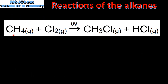And finally here we have the overall equation for the reaction — methane reacting with chlorine in the presence of UV light to form chloroethane and hydrogen chloride. So that's all from this video; don't forget to check the video description for a link to a practice worksheet.